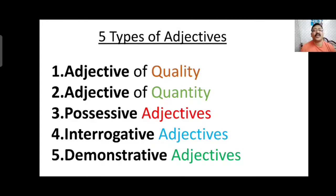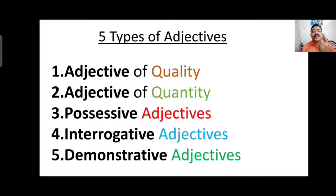There are five types of adjectives. First is adjective of quality. Second is adjective of quantity. Third is possessive adjective. Fourth is interrogative adjective. And fifth is demonstrative adjective. Now let's discuss each one in detail.